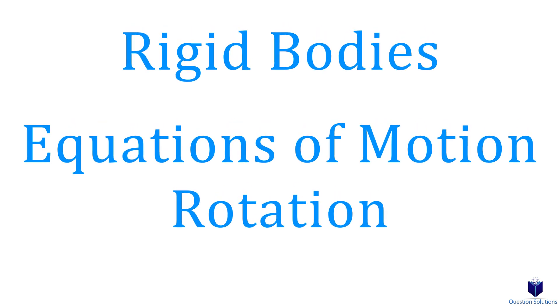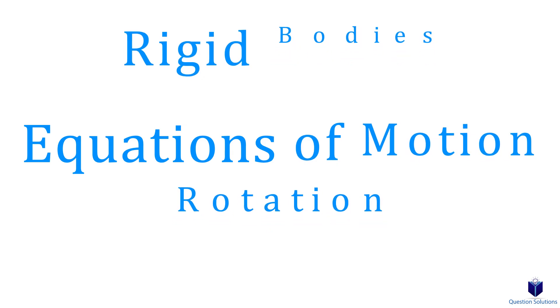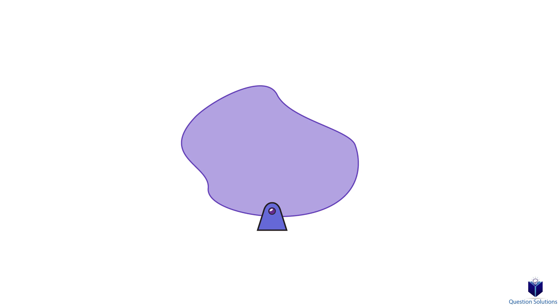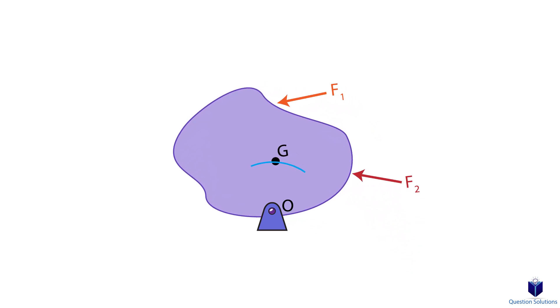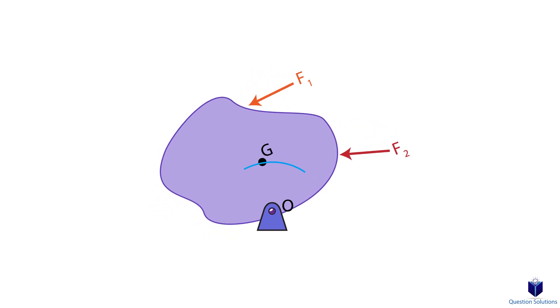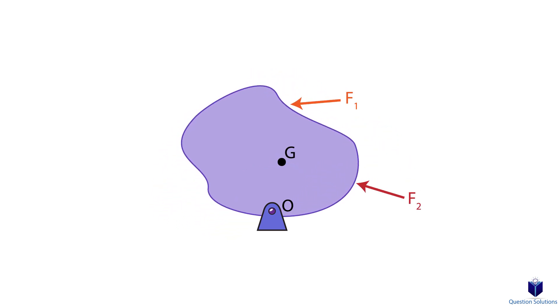Let's take a look at objects that spin about a fixed axis and how we can solve for unknown forces. We can attach a pin to a blob-like object at the bottom, label it O, and apply some random forces. The center of mass moves in a curvilinear path, so the acceleration at G can be broken into normal and tangential components. Normal acceleration points towards the center of the curve, while tangential acceleration points tangent to the path.